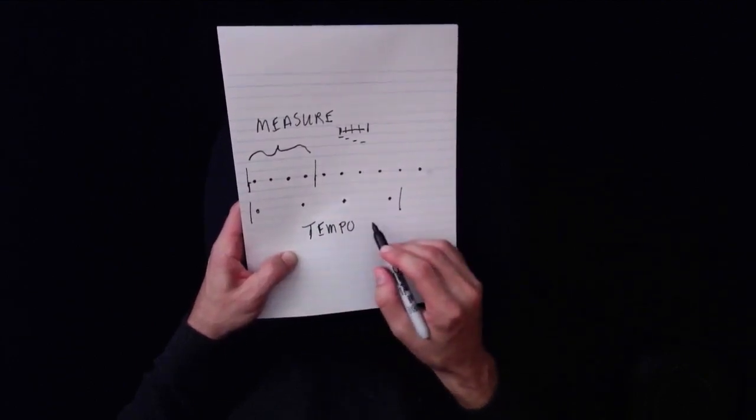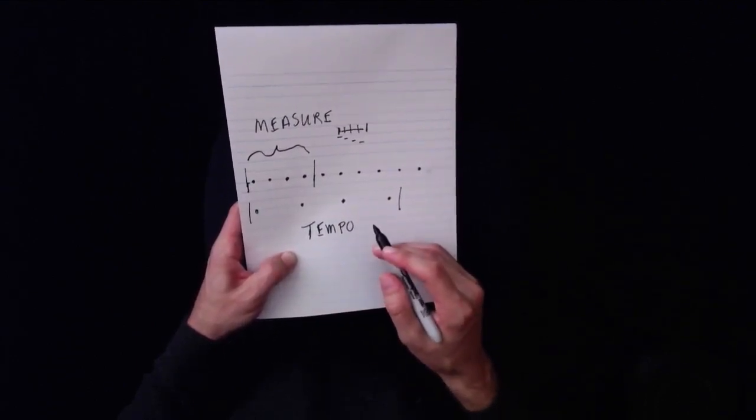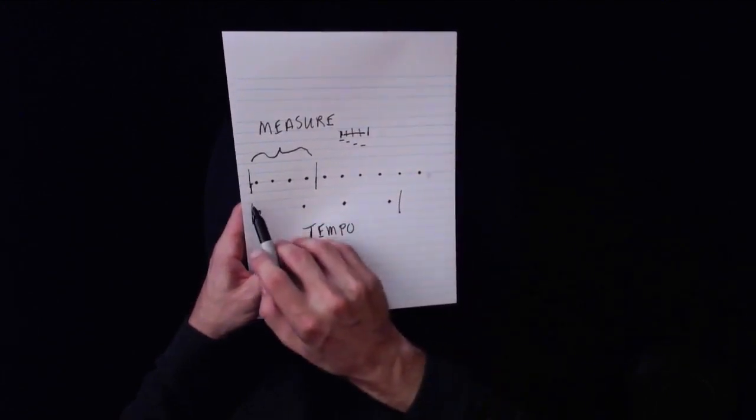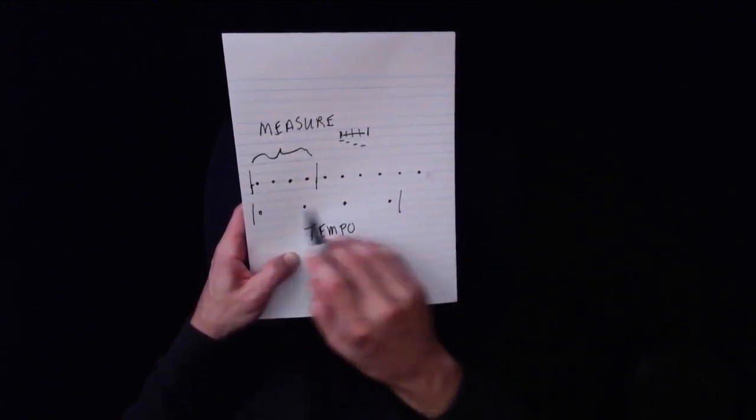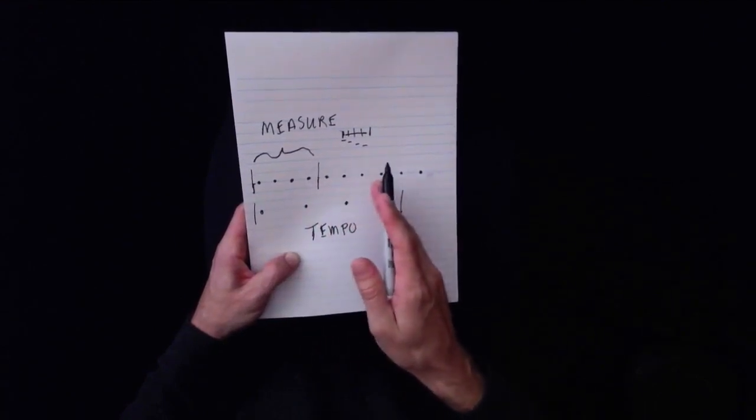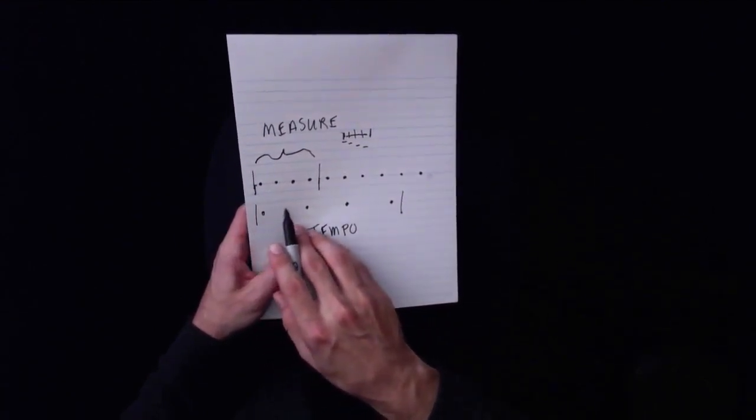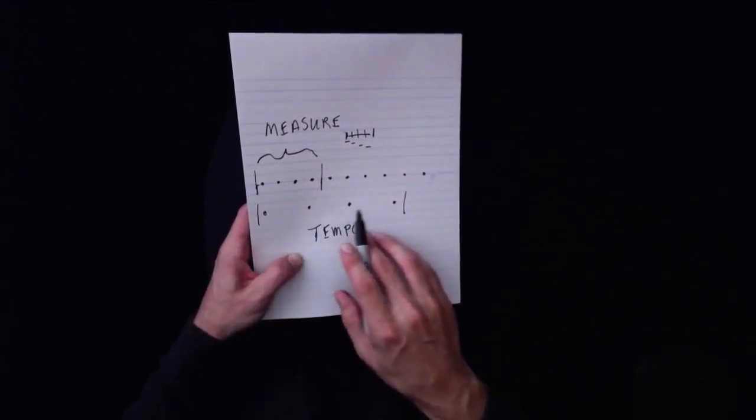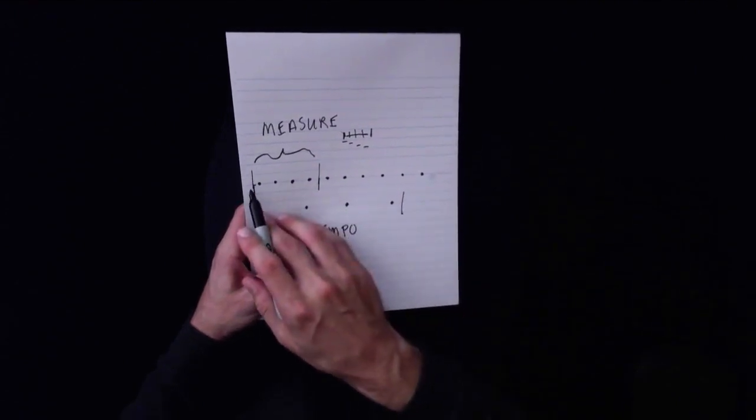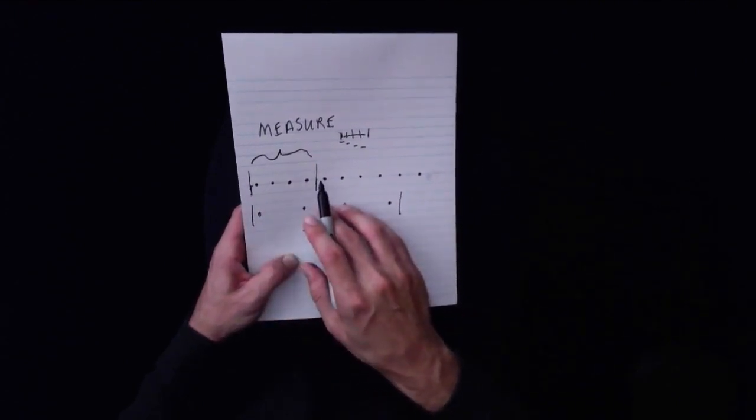Remember, tempo means speed of the beat, or more precisely, the speed in which we encounter the beats, because time always moves at the same rate. So we're going to encounter these beats on the second measure more slowly than we're going to encounter the beats on the top measure right here.